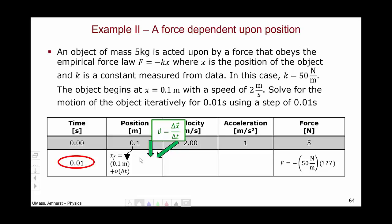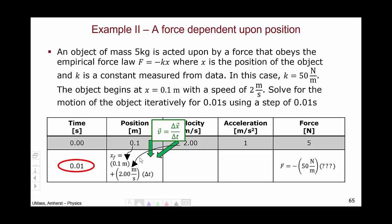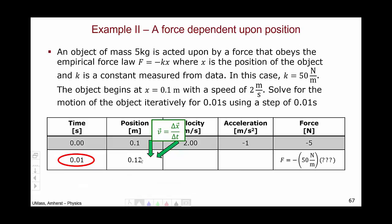The initial position is 0.1. The initial velocity is 2 meters per second. And the delta t from 0 to 0.01 is 0.01, which comes out to 0.12 meters.